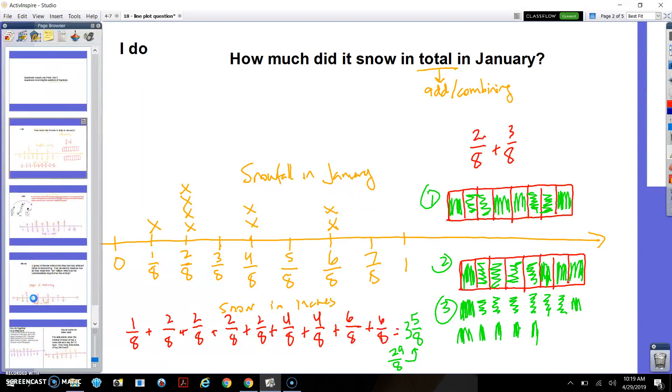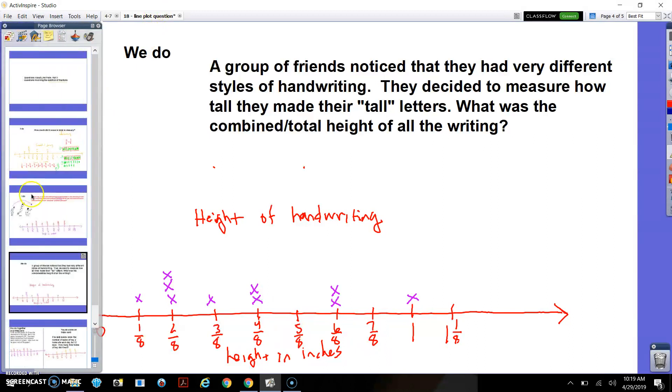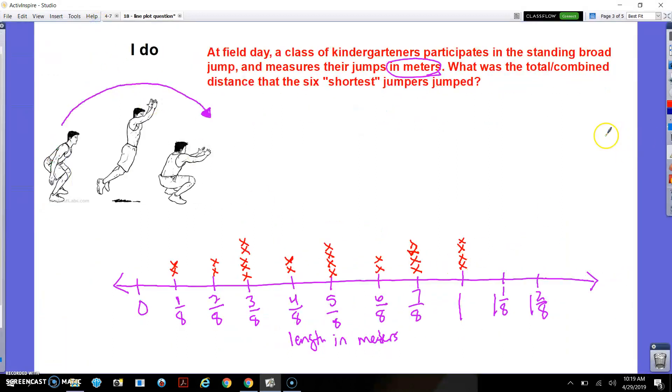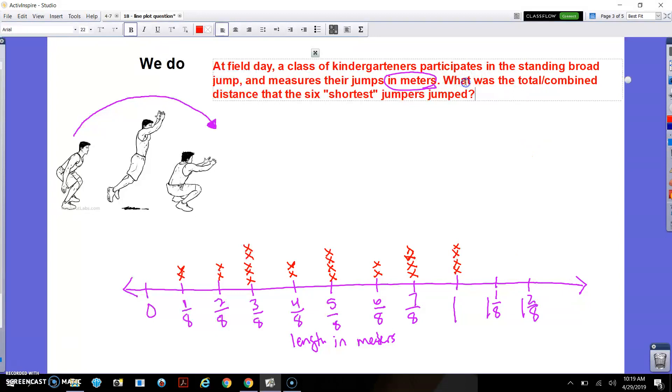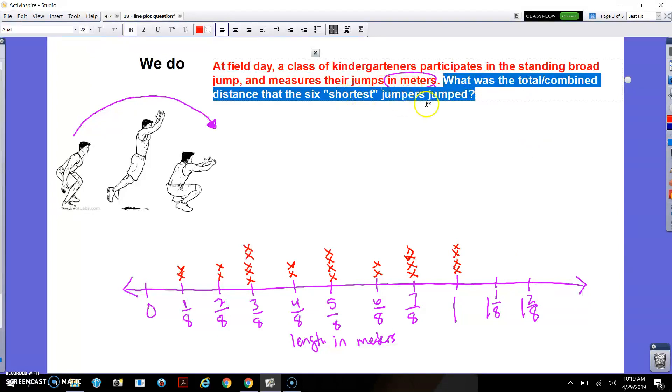So let's do one together. Open up your math notebook now. Actually, let's do this one I think makes a little more sense. So here's our kindergartners broad jumping yesterday. If you want to make this line plot real quick, you can. Here's the question I'm going to ask. What was the total or combined distance that the six shortest jumpers jumped? So I'm not going to add up all these together. We're just going to look at the six students who jumped the shortest. So go ahead and take a moment to write down your line plot and to write down your question. And then we'll add them up.